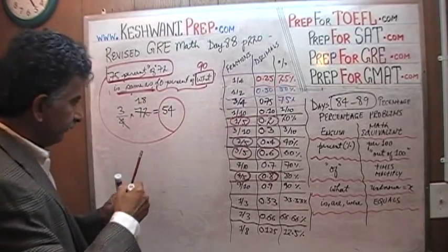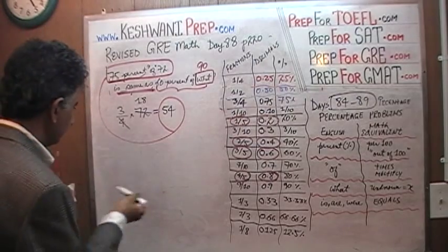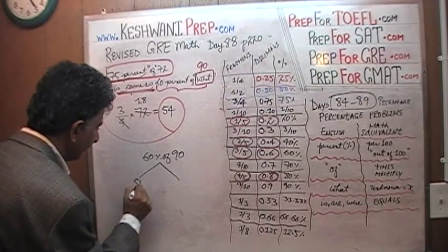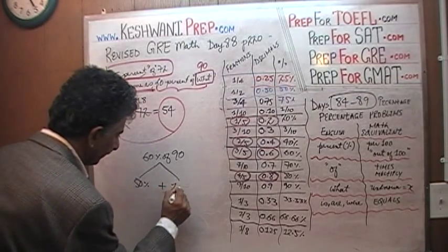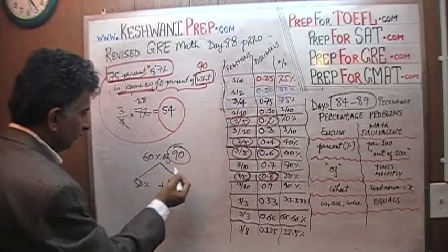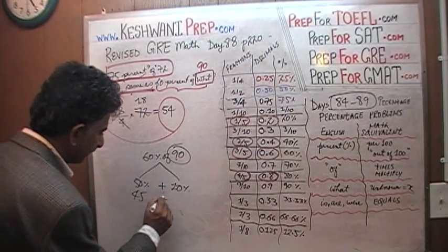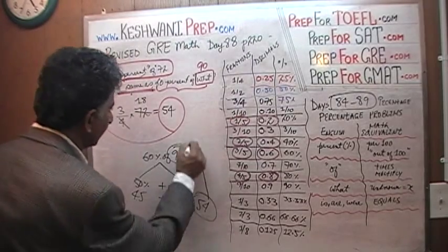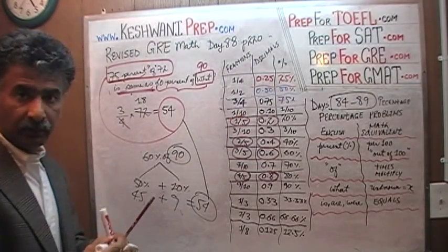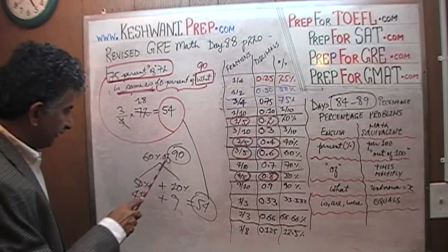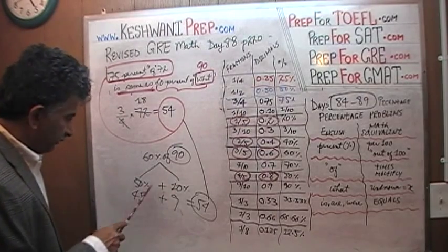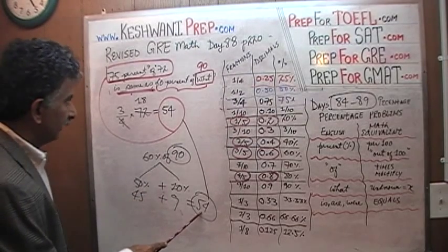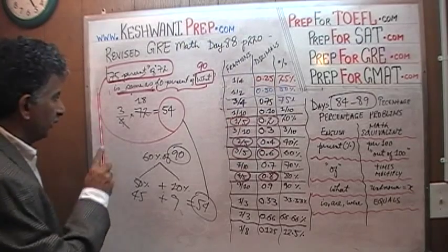Now let's figure out what 60% of 90 is. 60% of 90 is the same as 50% plus 10%. I know 50% of 90 is 45, and 10% of 90 is 9. So 45 plus 9 is 54. It agrees! We just showed that 60% of 90, which equals 54, is in fact the same as three-quarters of 72. It works.